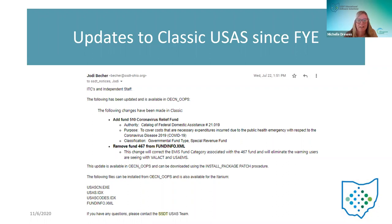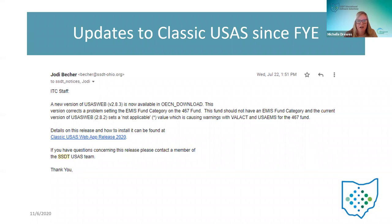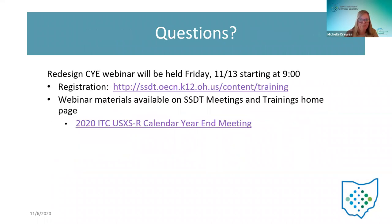We also removed fund 467 from the fund info XML. We put that in there thinking there needed to be an EMIS fund category for the 467, and there doesn't. During fiscal year-end, everyone was getting warnings saying they had to put an EMIS fund category in for the 467 — and you didn't. So we corrected that so you don't get those warning messages anymore. We also had to update USAS web regarding the 467 fund as well. The other change still to be made in classic is the F 1099 program.